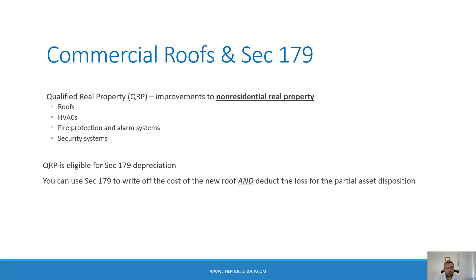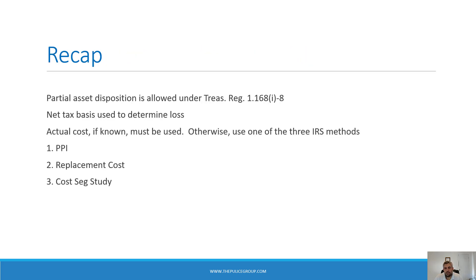If you own commercial real estate, this can get even better. We can use Section 179 rules to combine a loss from partial asset disposition with the immediate write-off of the replacement property. We're specifically dealing with qualified real property, or QRP, which represents improvements made to non-residential real property — this includes roofs, HVACs, fire protection, alarm systems, and security systems. QRP is eligible for Section 179 depreciation, which allows you to immediately deduct up to $1,080,000 in depreciation in year one (2022 limits). This is a somewhat aggressive strategy, so make sure you're working with a professional, but it can save you a ton of money in taxes if done properly.